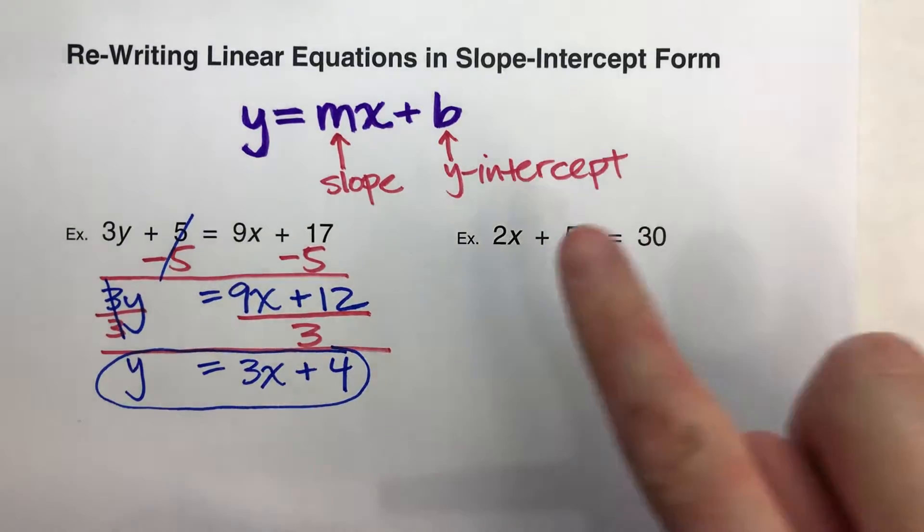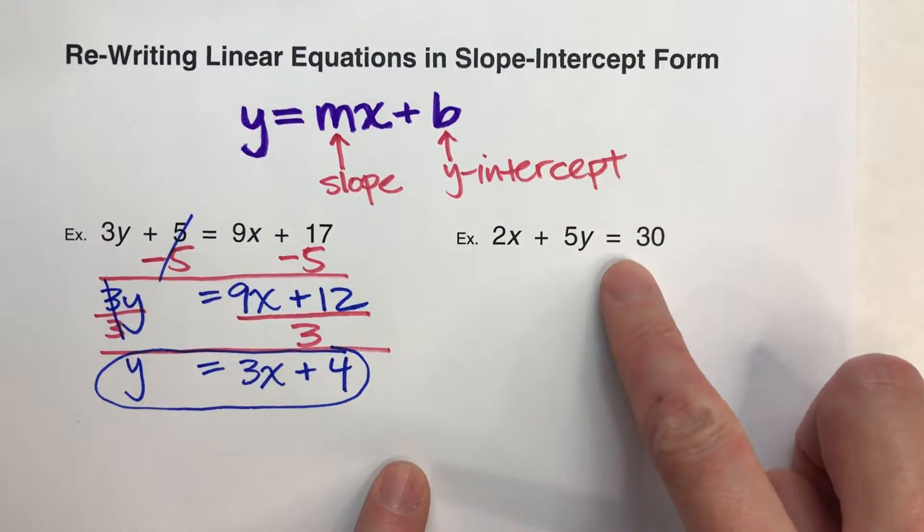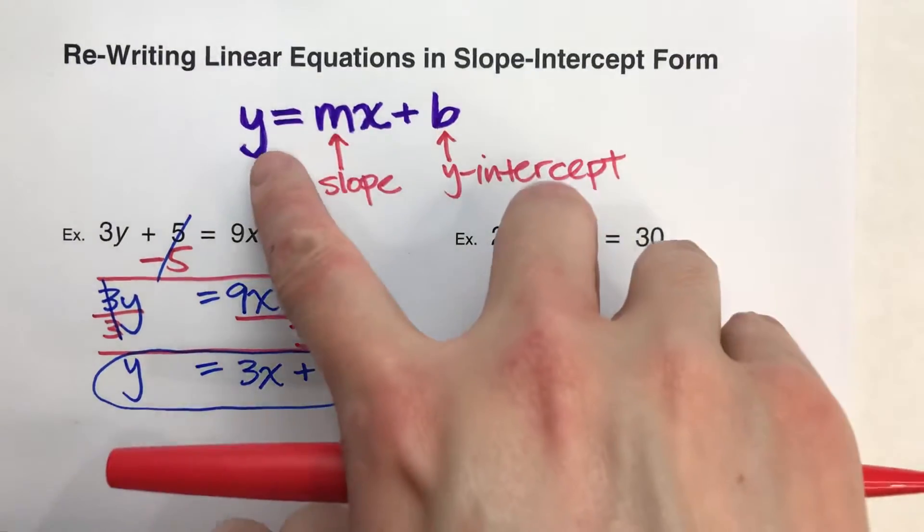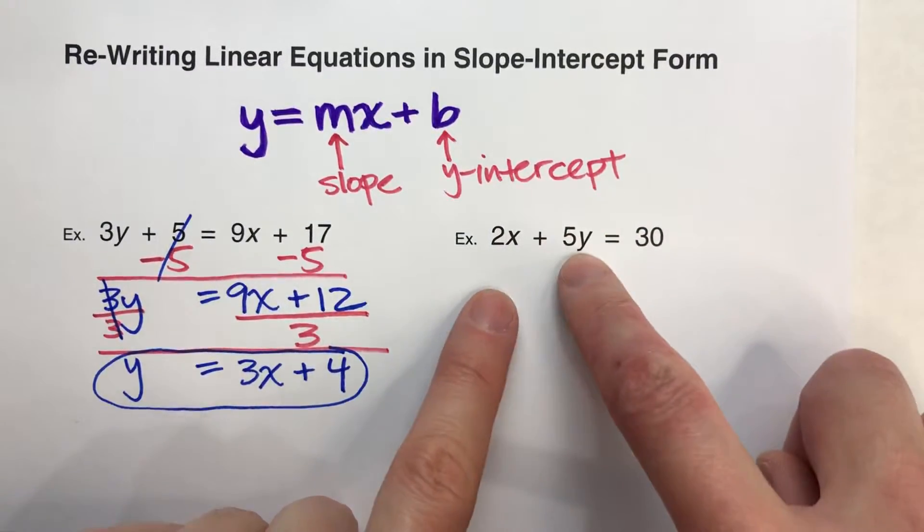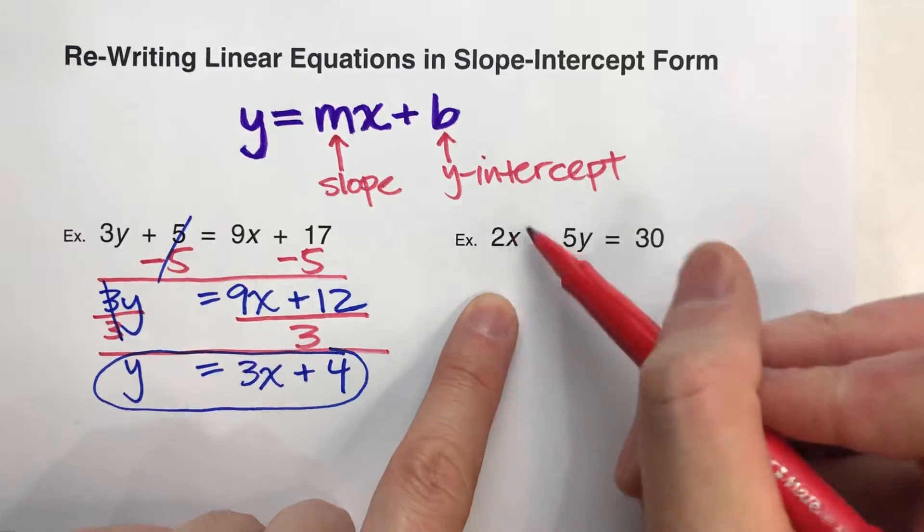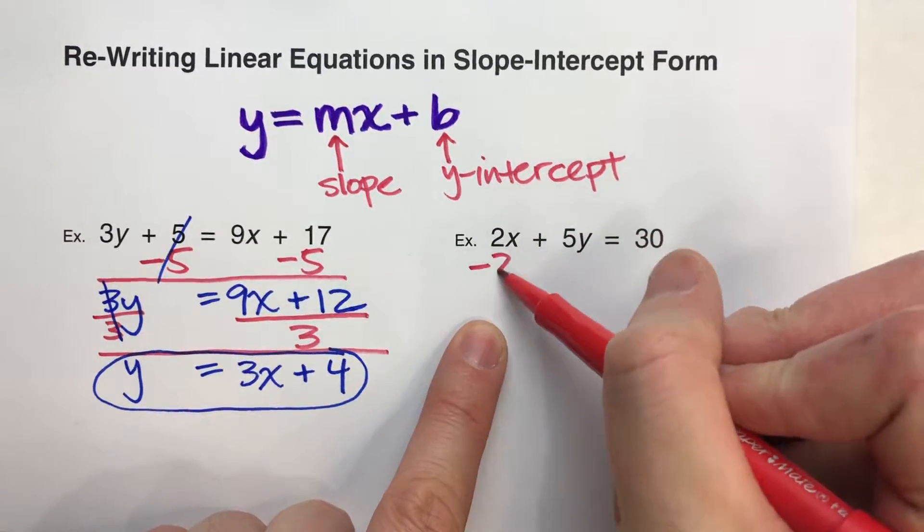So let's do another example here. 2x plus 5y equals 30. Again, we want y by itself. So I've got to undo everything around y. I'm going to start by undoing this 2x, so I'm going to subtract 2x.